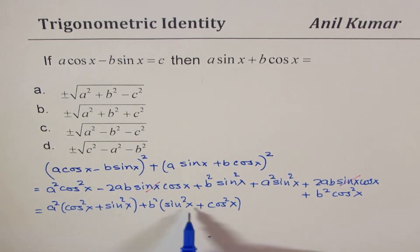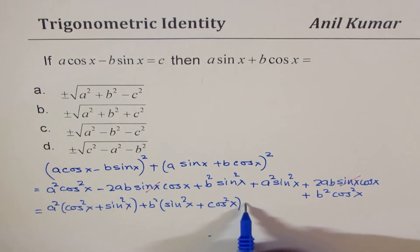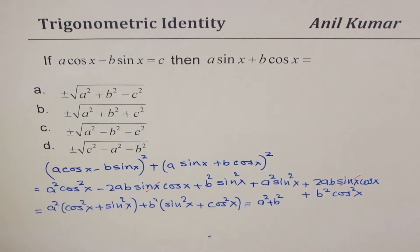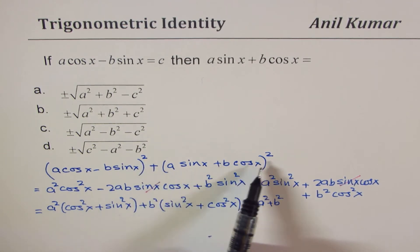Now sin square x plus cos square x is 1 and therefore we could write this as A square plus B square, correct? So in a way, we have shown that A cos x minus B sin x whole square plus this is A square plus B square, right?